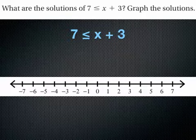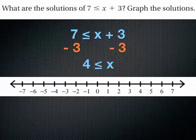Look at the variable. Notice that you're adding 3 to the variable. I need to do the inverse or opposite again. The opposite of adding 3 is subtracting 3. I need to do this to both sides to keep the inequality true. When I do 7 - 3, I get 4 ≤ x.